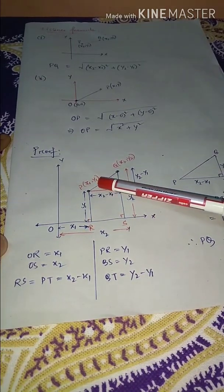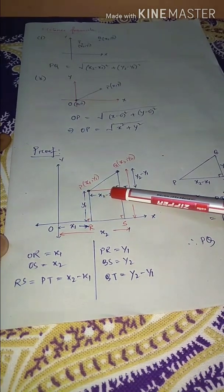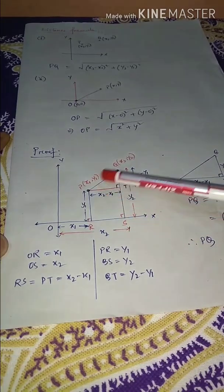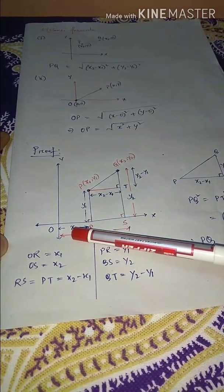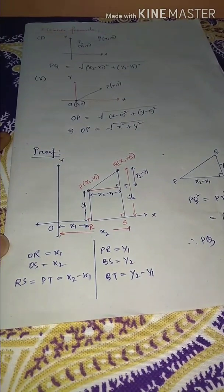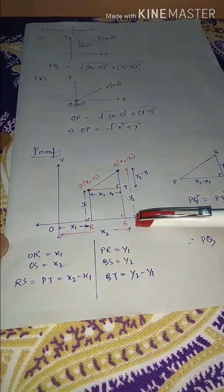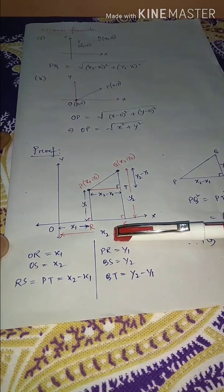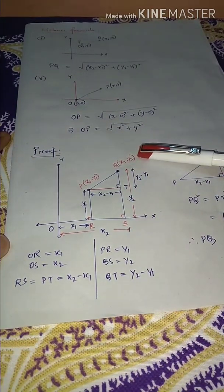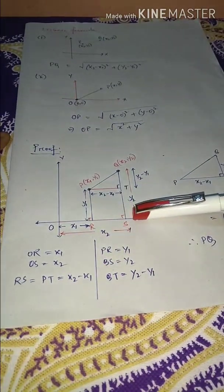Since P is at (X₁, Y₁), the distance from the origin to R is X₁, and from R to P is Y₁. This is how a point is plotted using perpendicular lines. Similarly, from origin O to S the distance is X₂, and from S to Q the distance is Y₂, giving Q the coordinate (X₂, Y₂).